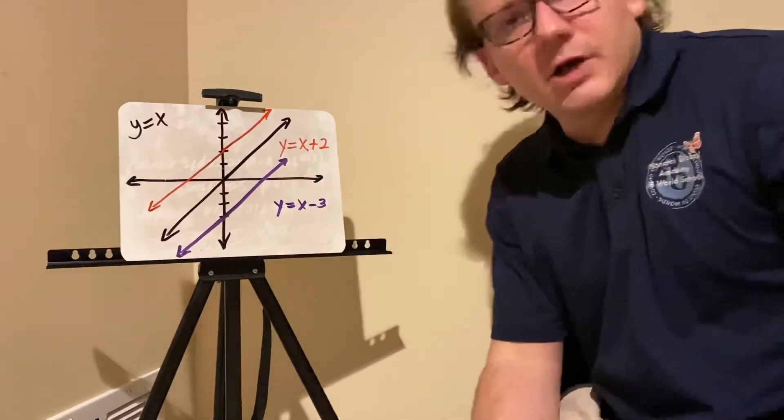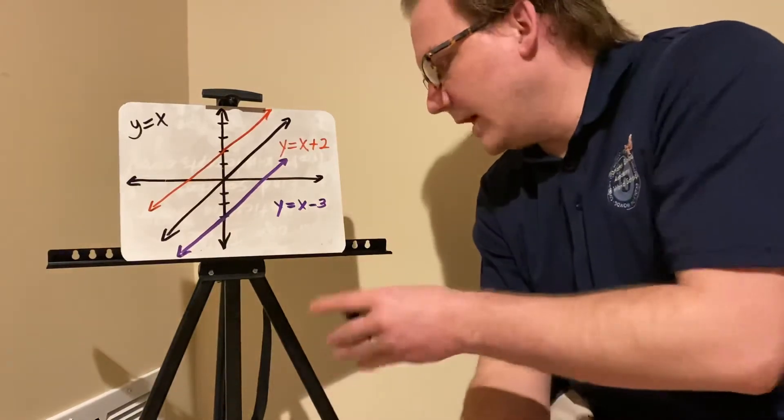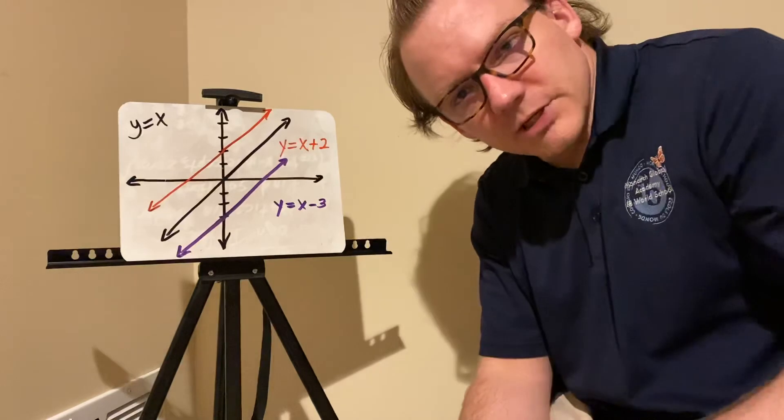This is in a form that we call y equals mx, where m is the slope, plus b, where b is the y-intercept. This is the easiest form to graph linear equations in.